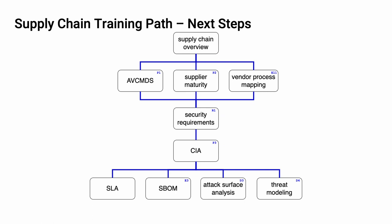The next step in this training sequence is to take one of the three following courses: the AVC-MDS, which covers the manufacturer's disclosure statement in the area of cybersecurity; the supplier maturity training, which covers how a supplier self-reports the maturity of their processes in the context of the AV-CDL; or the vendor process mapping training, which covers how to take established vendor processes and map them to the corresponding AV-CDL processes. This helps to ensure that no gaps exist between the vendor and the customer in the area of cybersecurity.